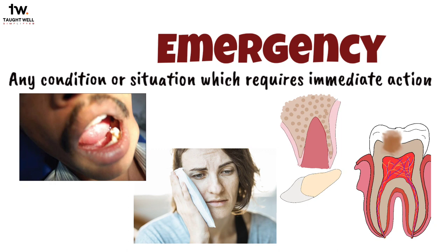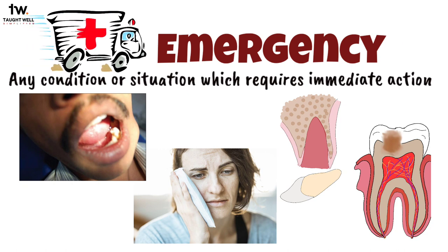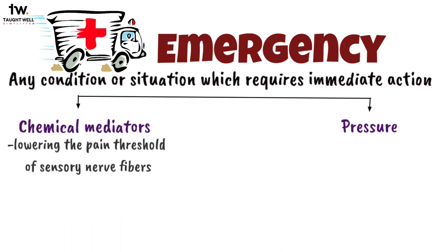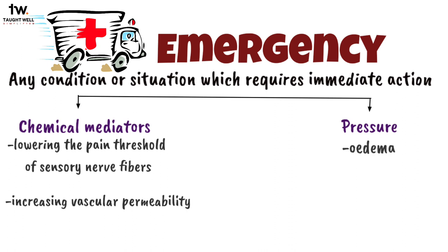If you have ever had a toothache, you know that it's a very agonizing experience. You need to rush to your local dentist — it's an emergency that needs to be treated as soon as possible. The pain in endodontic emergencies is associated with chemical mediators and pressure. Chemical mediators cause pain directly by lowering the pain threshold of sensory nerve fibers or by increasing vascular permeability and producing edema. Increased fluid pressure resulting from edema also stimulates the pain receptors.